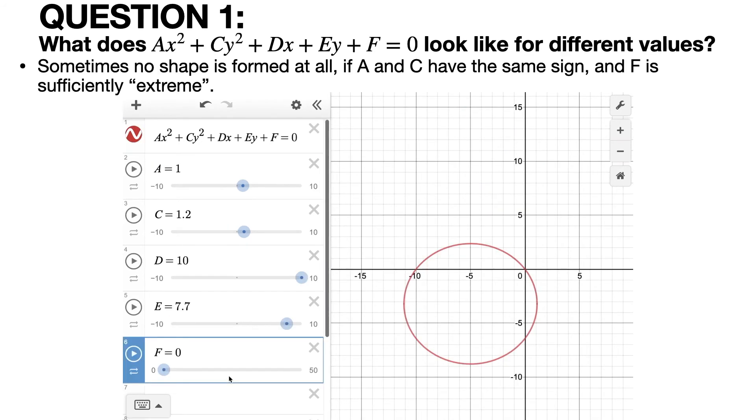And when is no shape formed at all? We can view this in other ways, but the key determinant is whether F is extreme enough in a certain direction, and whether A and C have the same sign. So at a certain point, if F gets big enough, then the circle or ellipse gets small and nothing else appears.